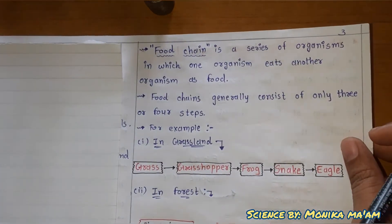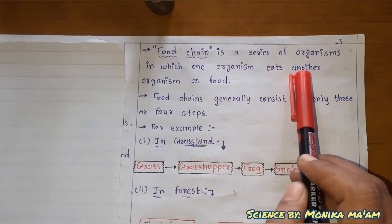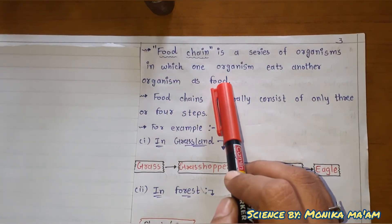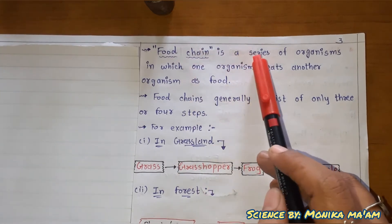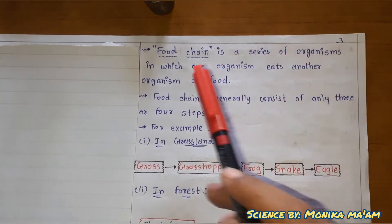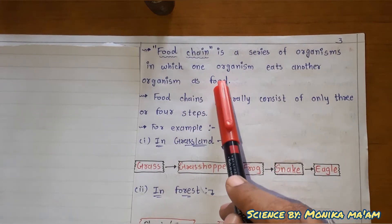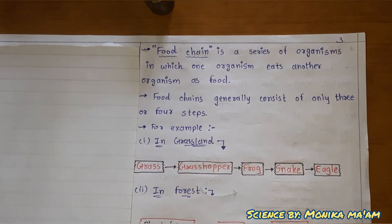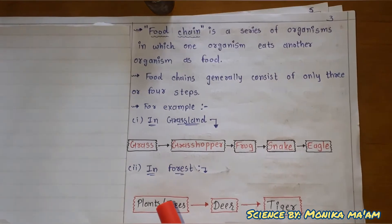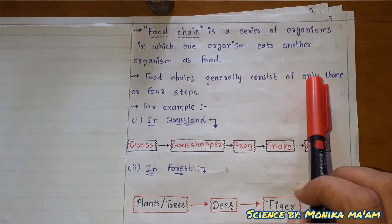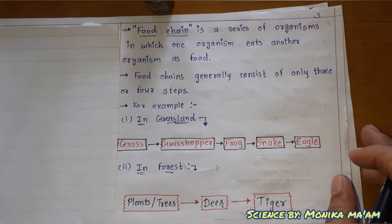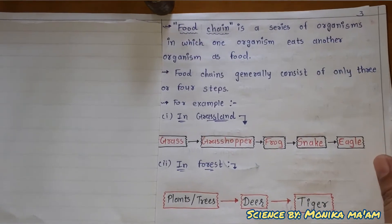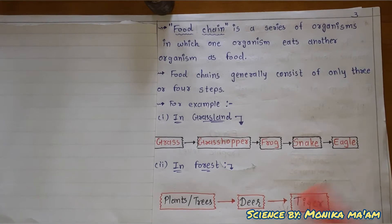A food chain is a series of organisms in which one organism eats another organism as food, and that organism is eaten by yet another. Food chain consists of only three or four steps generally, and at most five steps.